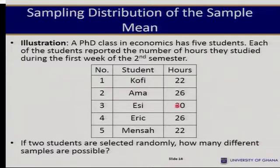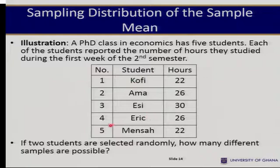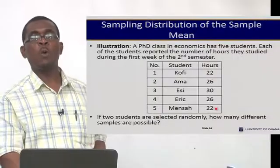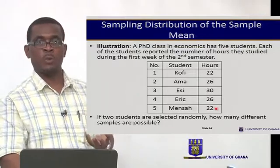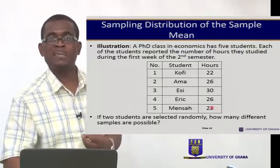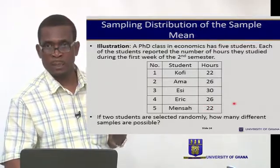Let's illustrate this. A class has only five students: Kofi, Ama, AC, Eric, and Mensa, coded 1 through 5 respectively. The number of hours they studied in a particular week: Kofi studied 22 hours, Ama 26, AC 30, Eric 26, and Mensa 24. We want to take a sample of just two students and see on average how many hours they studied.